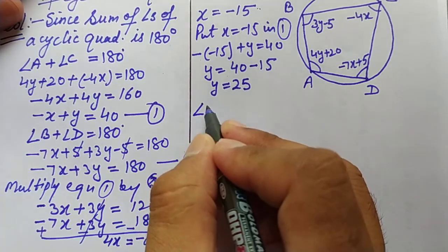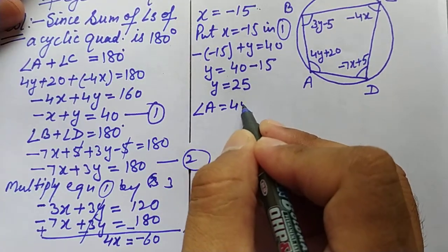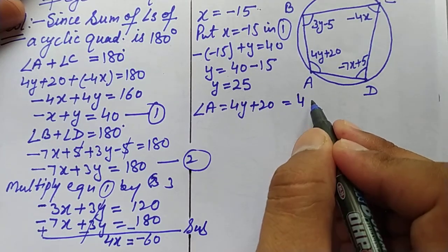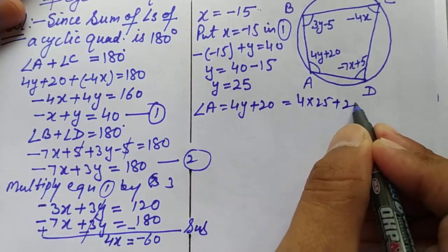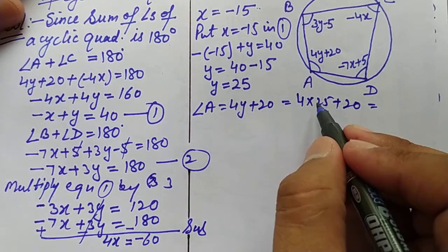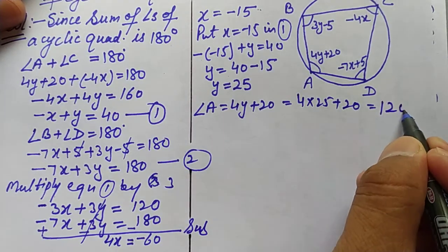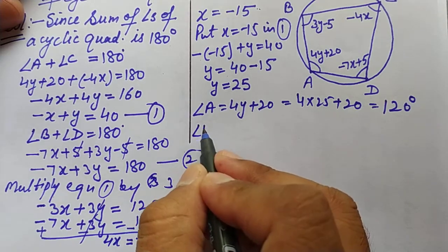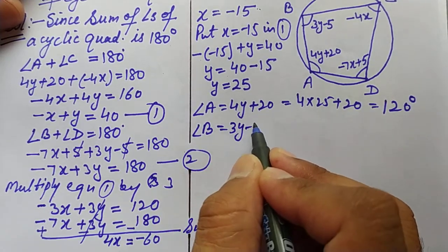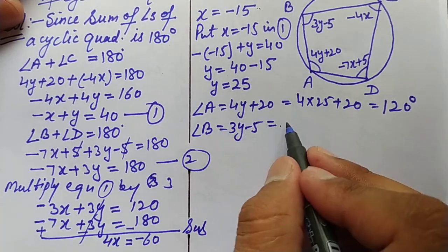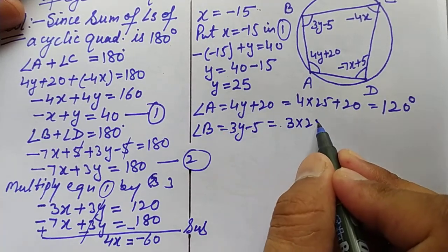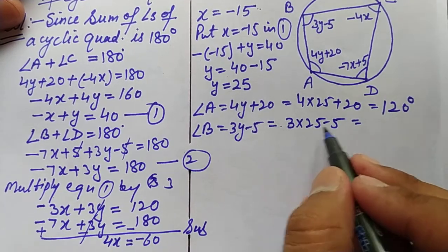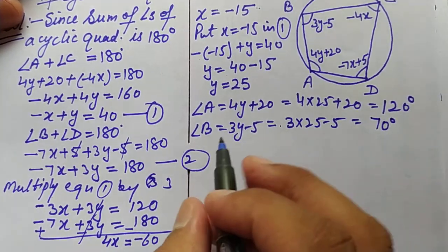Angle A = 4y + 20 = 4(25) + 20 = 100 + 20 = 120°. Angle B = 3y − 5 = 3(25) − 5 = 75 − 5 = 70°.